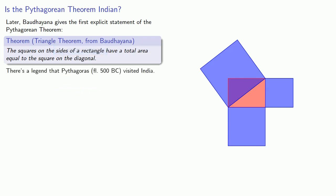Now, there's a legend that Pythagoras, who lived around 500 BC, visited India. So this leads to some speculation. Might he have learned the Pythagorean theorem from the Indians? It seems that the most likely answer to this question is probably not. There are two reasons for this.